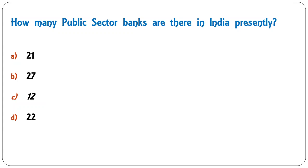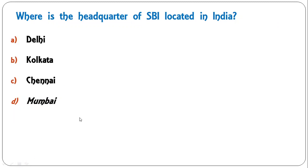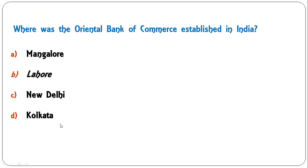The correct answer is 12. There are 12 public sector banks after the merger of several banks in 2020. Next question: where is the headquarters of SBI located in India? Options are Delhi, Kolkata, Chennai, or Mumbai. The headquarters of SBI is in Mumbai, so D is the correct answer.